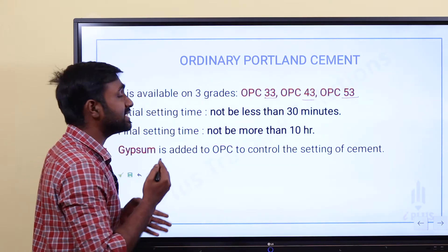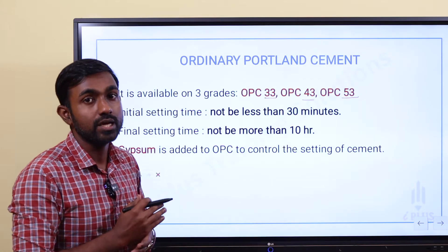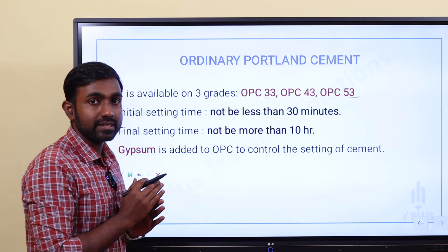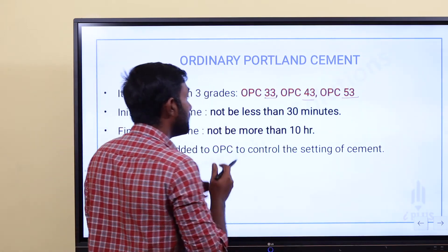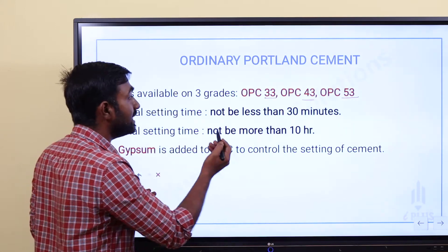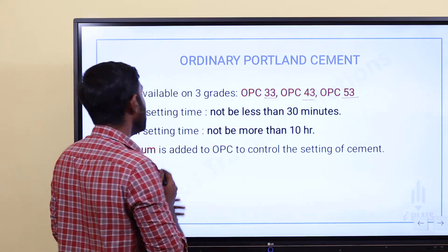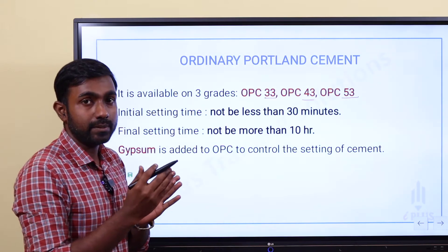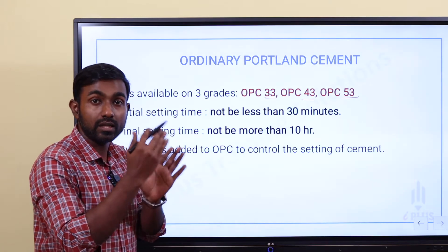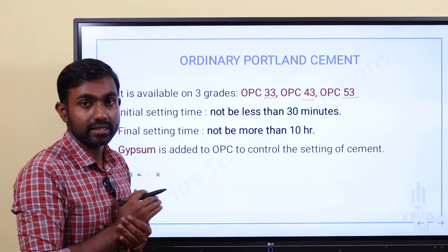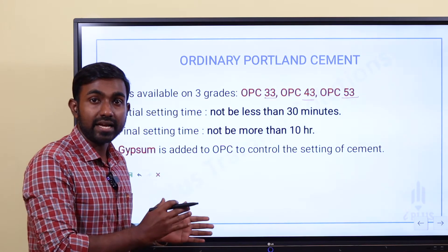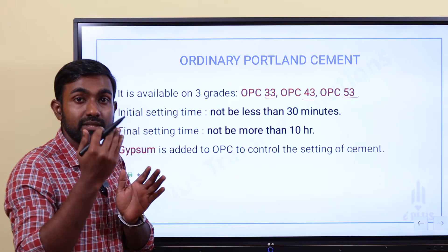Ordinary Portland cement: the initial setting time is not less than 30 minutes, and the final setting time is not more than 10 hours.